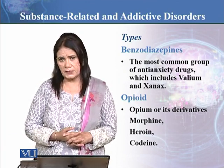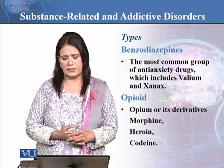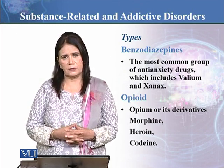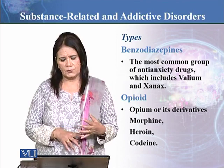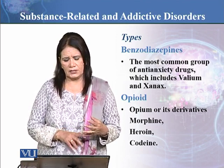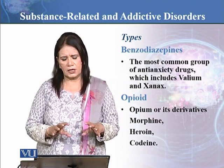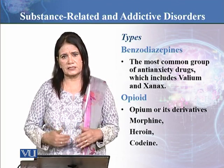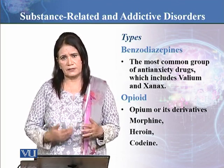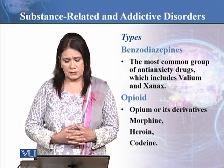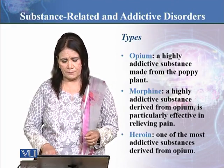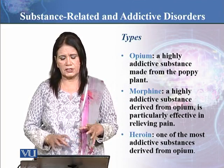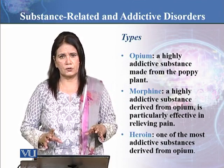Then opiates — as I have referred to earlier, these are opium and its derivatives. The derivatives include morphine, heroin, and codeine. This is a group cluster derived from opium. Opium is a highly addictive substance made from the poppy plant, and it is very common in Pakistan.